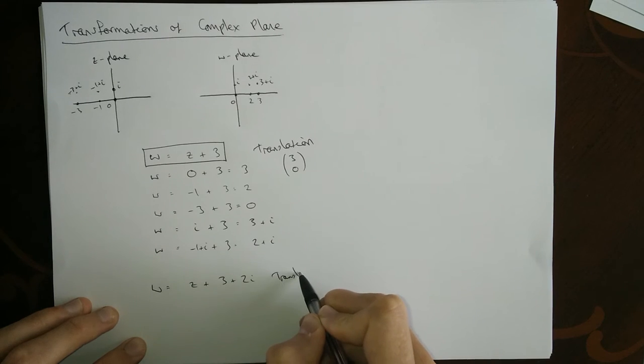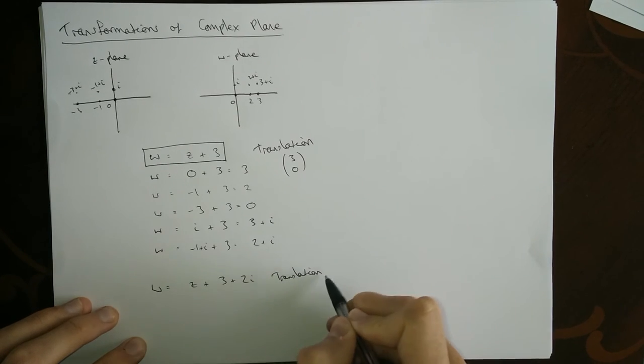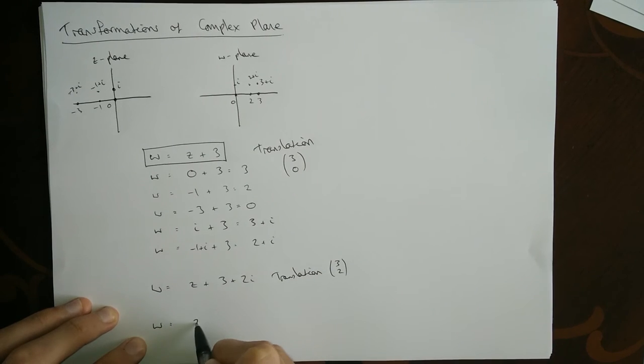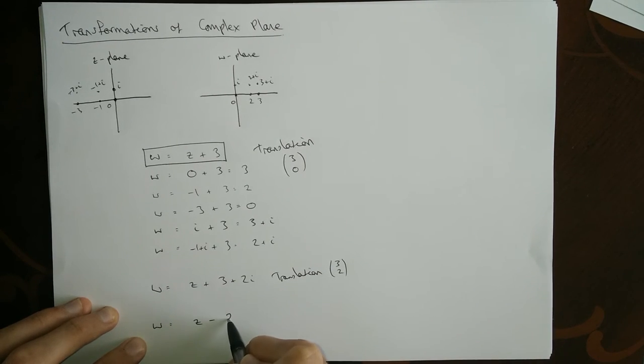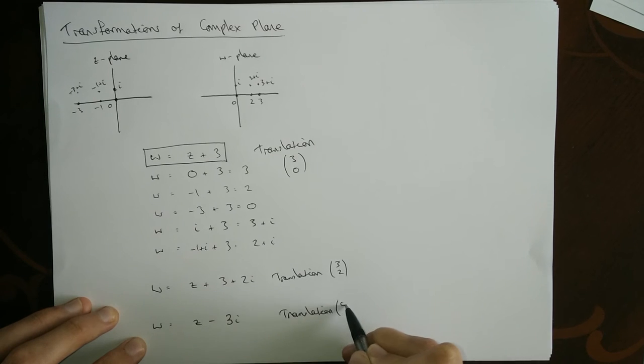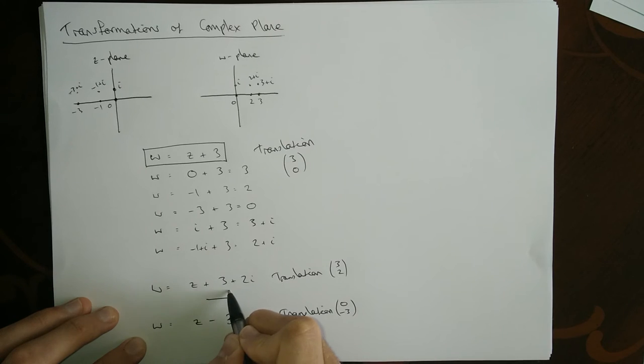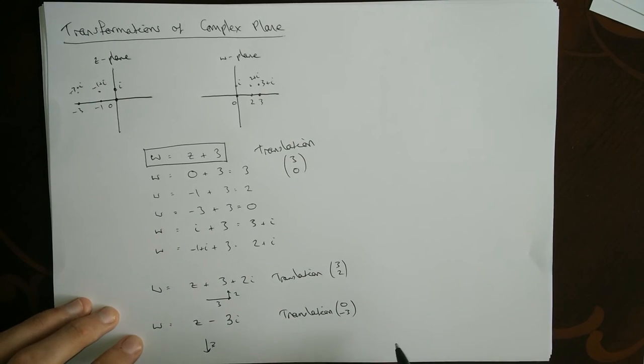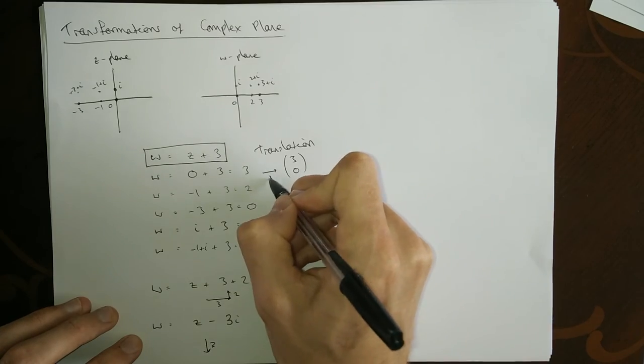We could do other translations: this would be a translation translating by three in the x direction and then two in the y direction. This one would be a translation but this time there's no real part so it's not moving in the x direction, it's moving down by three in the y direction.